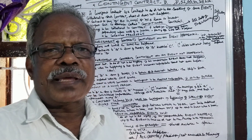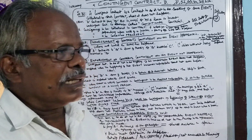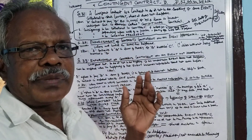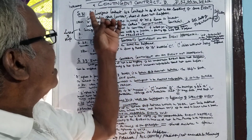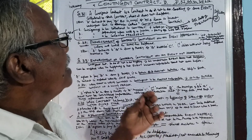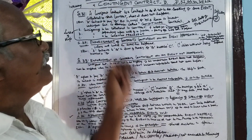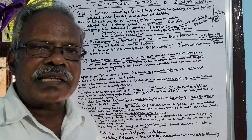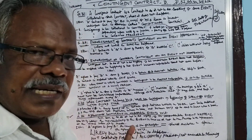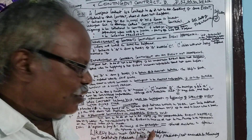It may or may not happen. Now we will see section by section. The word 'contingent' is derived from the French word 'contingent,' which originated during the 14th century. The word contingent means likely but not certain to happen.